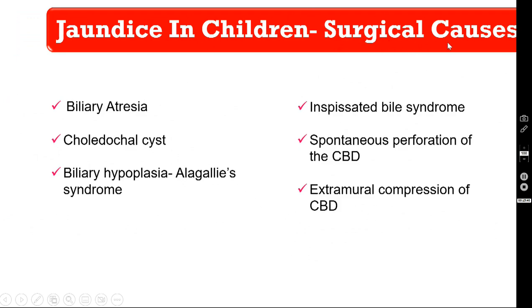The various surgical causes for jaundice in babies are: biliary atresia (the commonest), choledochal cysts, biliary hypoplasia with or without Alagille syndrome, inspissated bile syndrome, spontaneous perforation of the CBD, and extramural compression of the common bile duct.